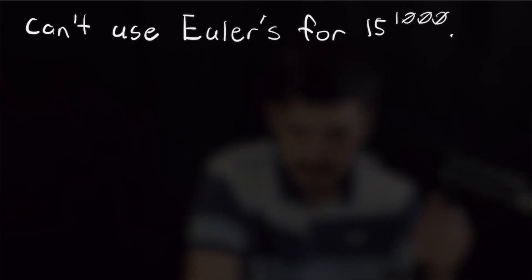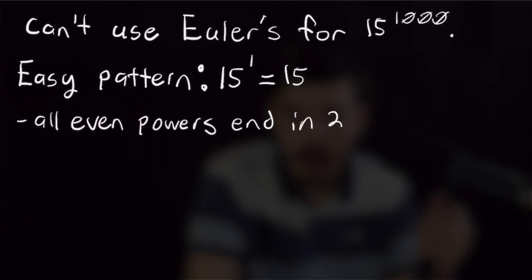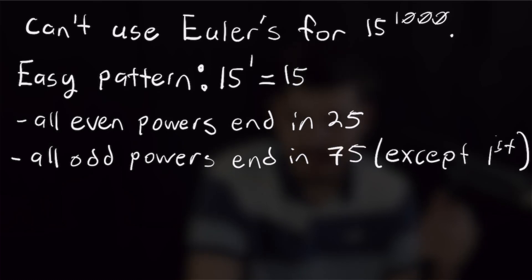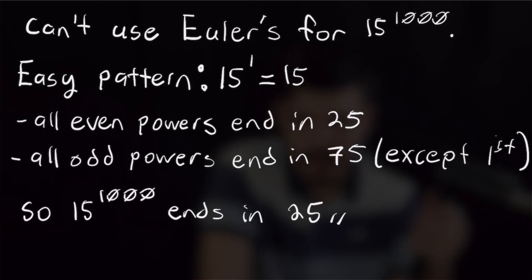We can't use Euler's for 15 to the 1000th either as 15 and 1000 are not relatively prime. But we have a very easy pattern that we can identify here. 15 to the first power is equal to 15, but from there on out, all even powers will end in 25 and all odd powers will end in 75. So the first power is 15, and then it will alternate between 25 and 75 all the way up. But 15 to the 1000th is an even power, which means that the last two digits of 15 to the 1000 will be 25. And that finishes this problem off. And that's a good place to stop.